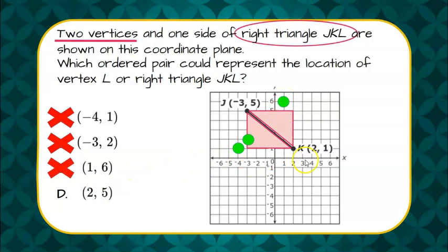And our last choice — hopefully this is it — two, up five, and there it is. This would form our vertex L. Choice D, at coordinates (2, 5).